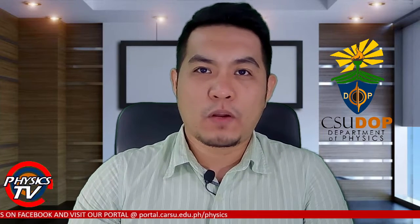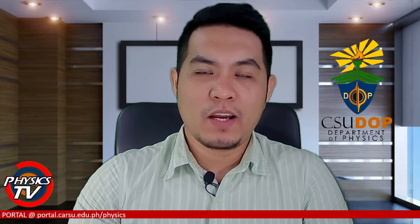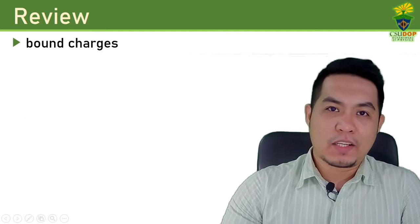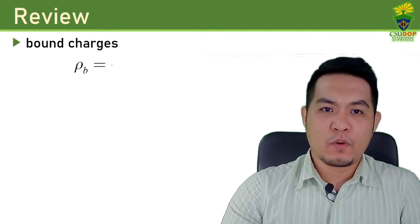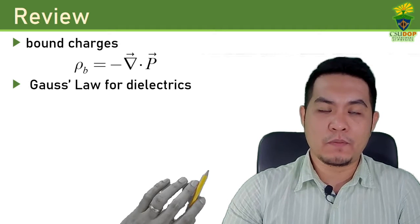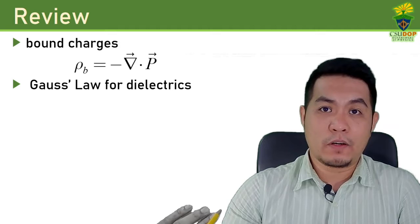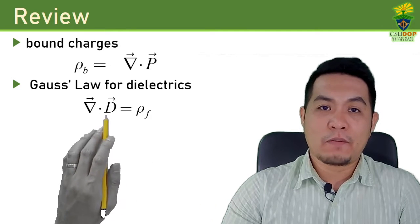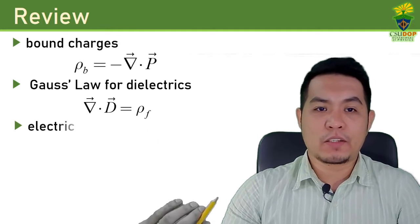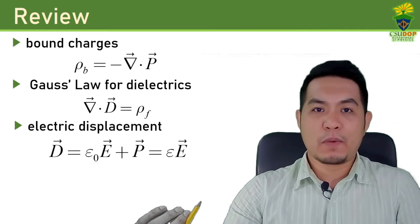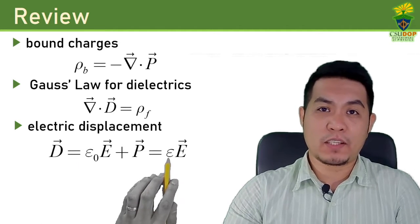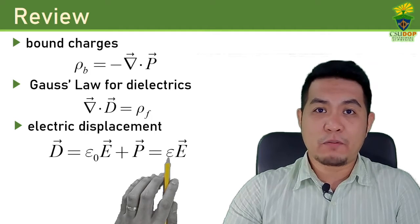Hello and welcome back to Physics 141, Classical Electromagnetism 1. This is now the last lesson for this chapter. So far we have discussed polarization and how it generates bound charges, where we can have volume bound charges which is just the divergence of the polarization. We also have generalized Gauss's law to cover dielectrics, so the divergence of the electric displacement gives you the volume free charge density. We also discussed the electric displacement, which is related to the total electric field by the proportionality constant epsilon, the permittivity of that material.